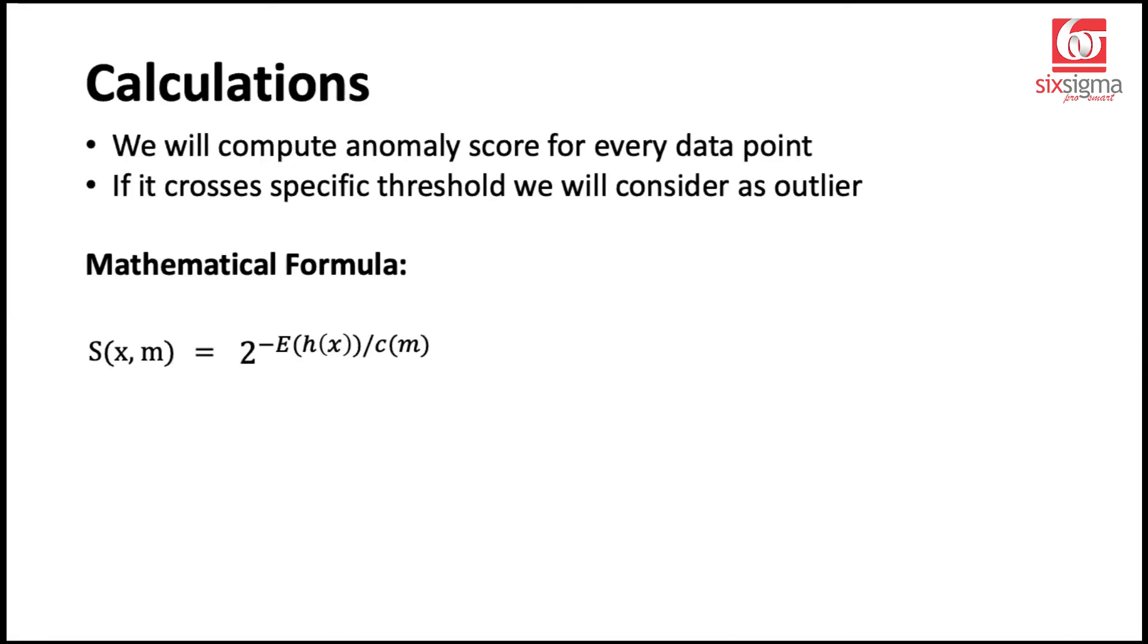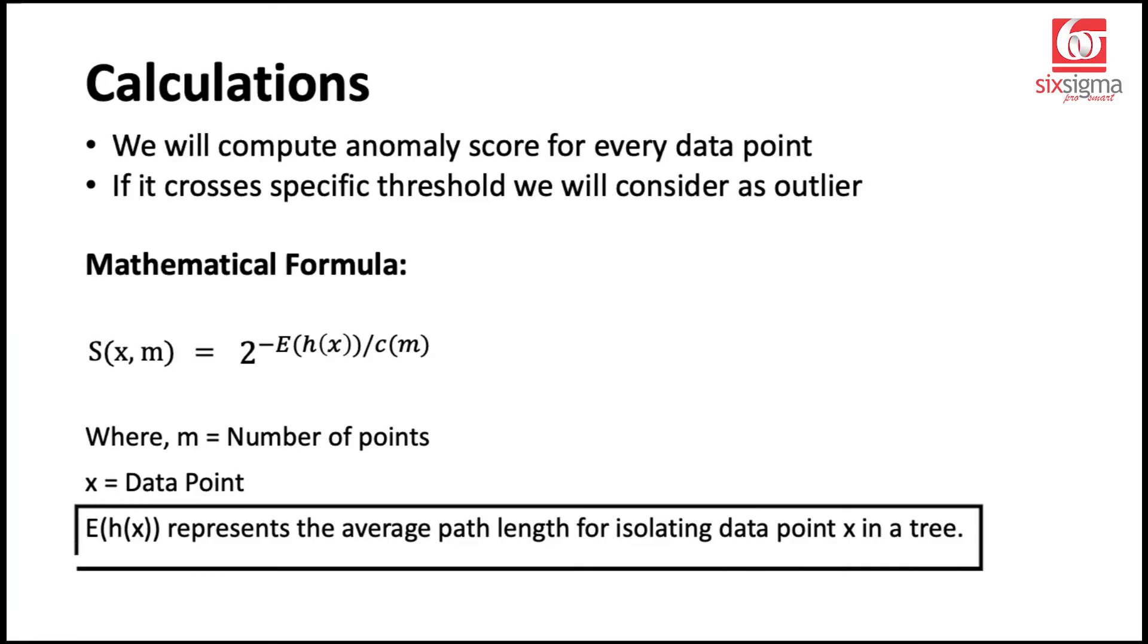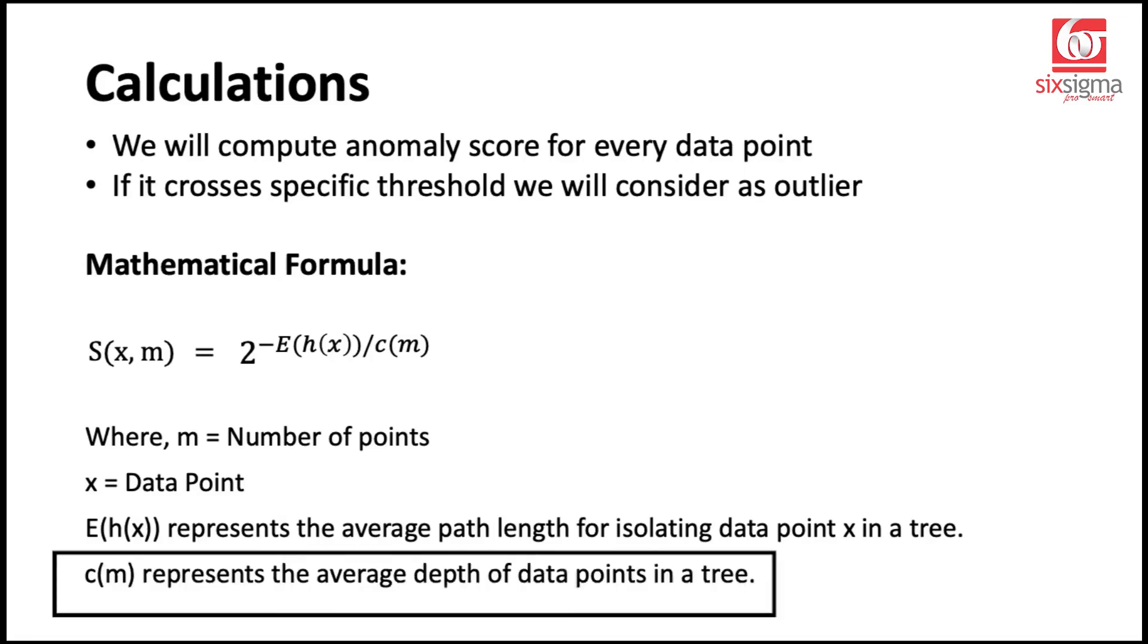Let's look at the mathematical formula for this. The formula for this is 2 raised to the power negative of expected value of E(h(x)) divided by c(m). Now, what is this? We are saying the score, the anomaly score, is a function of two variables, x and m. Let's understand what these terms are. So, m basically represents the number of points that we have. x is a particular data point, E(h(x)) represents the expected value or the average path length of the isolating data point x in a tree. And c(m) represents the average depth of data points in a tree.